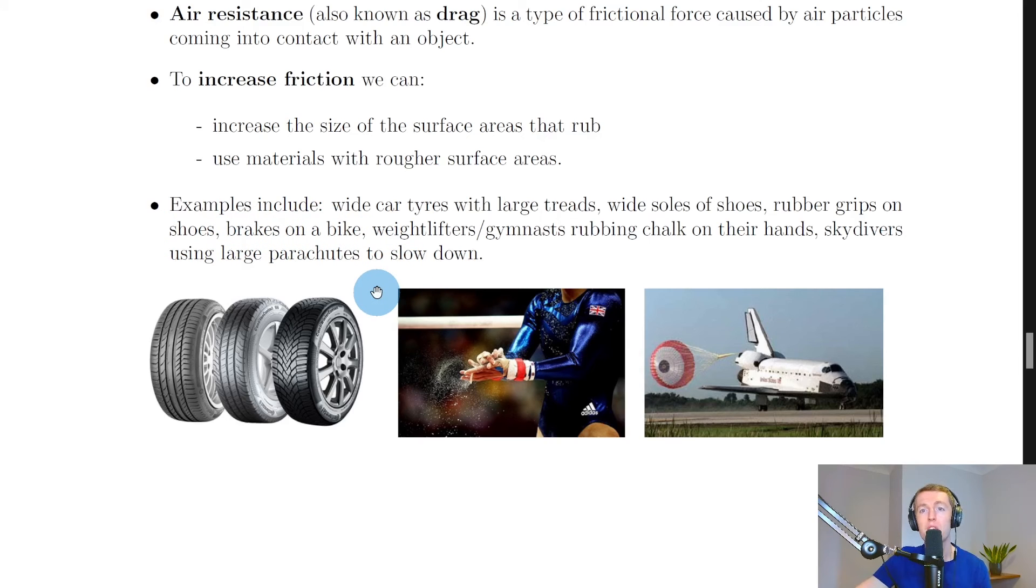Brakes on a bike is another important one. In order to slow down on a bike, you need to increase the friction between the brake pads and the wheels. Weightlifters or gymnasts rubbing chalk on their hands, as shown in the picture here, that's going to increase the friction between their hands and the bars or whatever they are holding. And lastly, we have skydivers using large parachutes to slow down. They need to increase their air resistance to do that by opening the parachute. Or it could be a space shuttle doing the same sort of thing to land on a planet with an atmosphere.